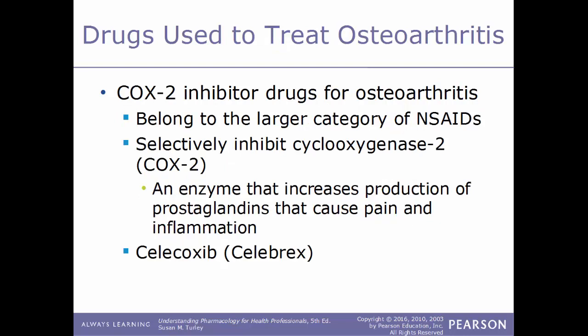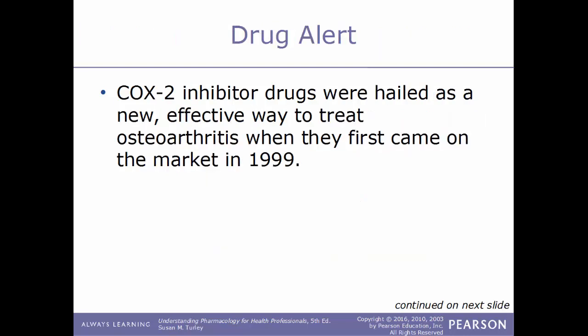Another type of drug used to treat osteoarthritis is COX-2 inhibitors. These belong to the larger NSAID category and act by selectively inhibiting cyclooxygenase-2 (COX-2), an enzyme that leads to increased production of prostaglandins, which cause pain and inflammation. By inhibiting this enzyme, these drugs lessen both inflammation and pain.